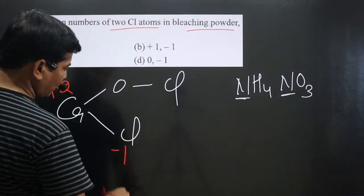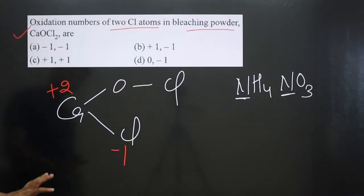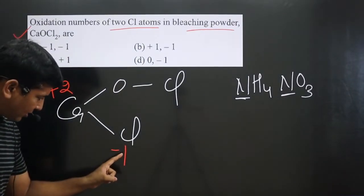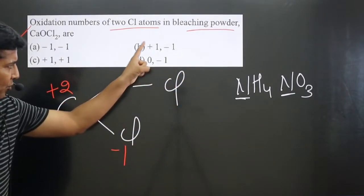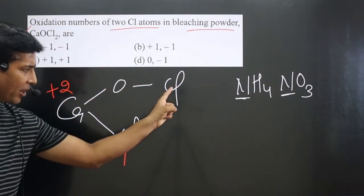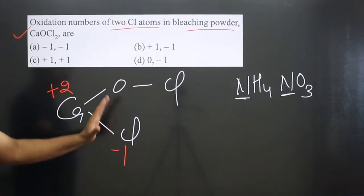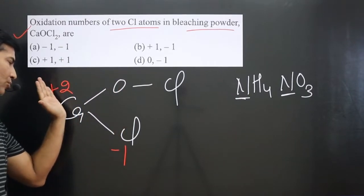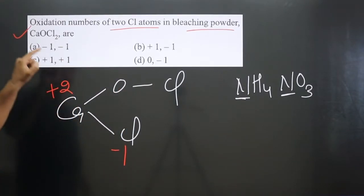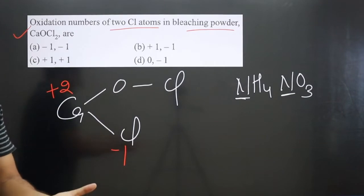This hydrogen is there. It will show minus one oxidation numbers. Now you can see, it is minus one. This entire portion should be minus one. Then minus one minus one is equal to plus two. Because whatever the total negative charge is there, it should be equal to the total positive charge. Then this bleaching powder will be neutral compound.